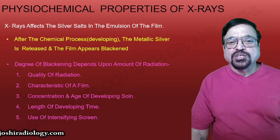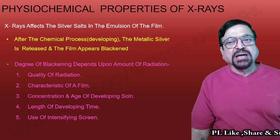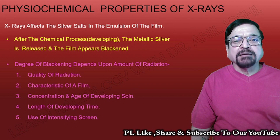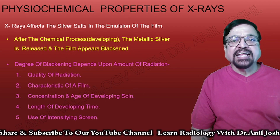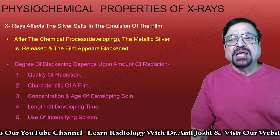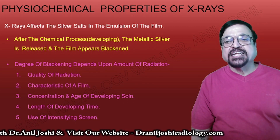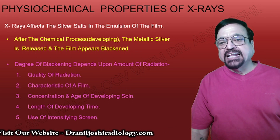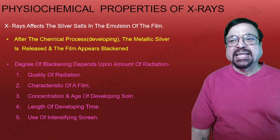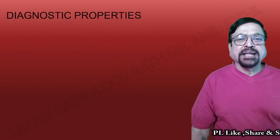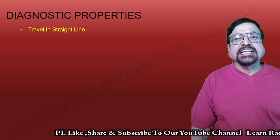Physiochemical properties: X-rays affect the silver salts in the emulsion of the film. After the chemical process called developing, metallic silver is released and the film appears blackened or darker. The shades of gray from white to dark are used in routine X-ray filming. The degree of blackening depends on the amount of radiation, the quality of radiation, characteristics of the film, concentration and age of developing solutions, length of developing time, and use of intensifying screens.